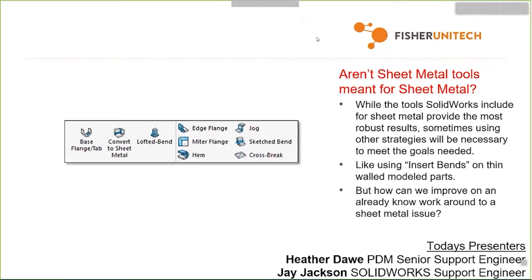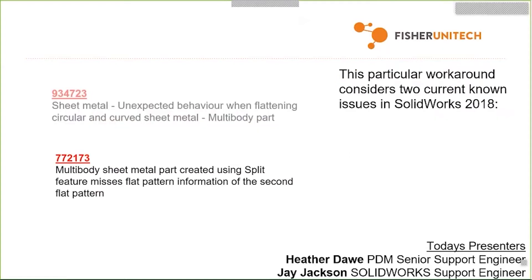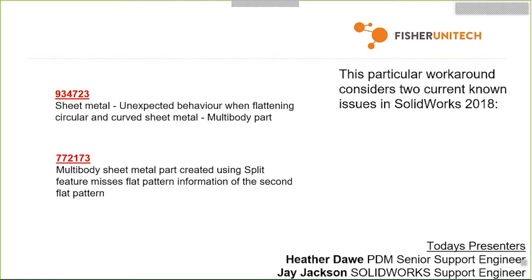But what happens when the tools actually provided for sheet metal still can't get the results we need because of a known issue? That's where we're going to start looking out of the box and thinking of different solutions. In this case, we're going to consider two known issues currently in 2018 — and I'm pretty sure they're still existing in 2019. SPR 934-723 says you get unexpected behavior when flattening a circular or curved sheet metal body that's a multi-body part.